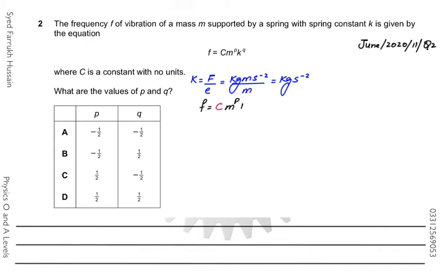The equation is F = C·M^P·K^Q. We do not write C in the dimensional equation because C has no units. So: frequency is s⁻¹ (hertz), mass is kg to the power P, and K is kg·s⁻² to the power Q.